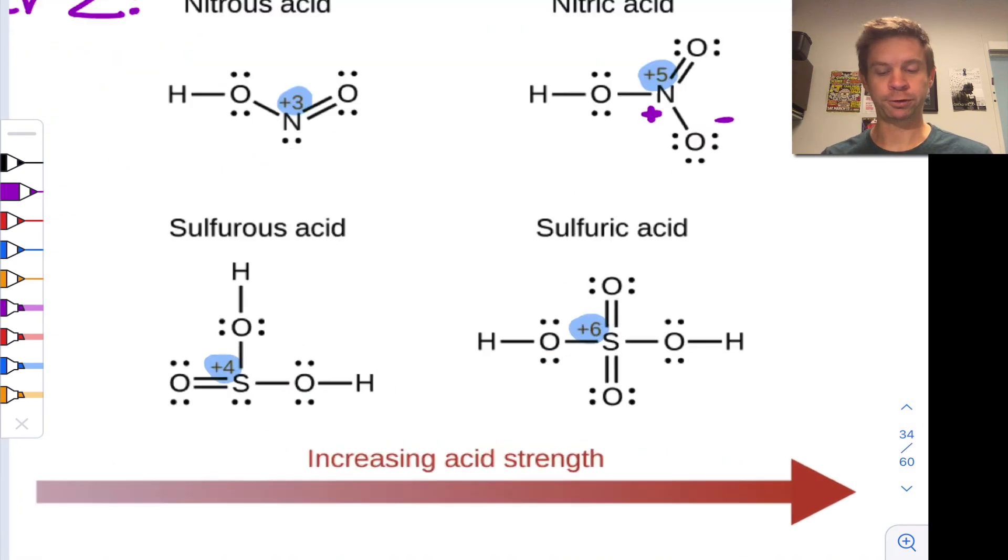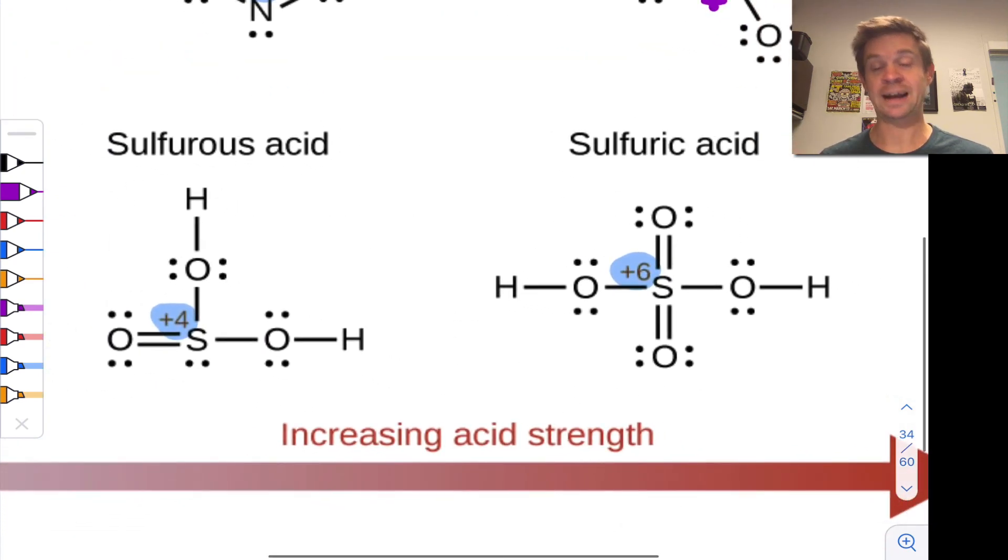Similar argument for sulfurous versus sulfuric acid. Sulfuric acid is much stronger than sulfurous acid because of the larger oxidation number in sulfuric acid, plus six at the sulfur, whereas it's only plus four in sulfurous acid.